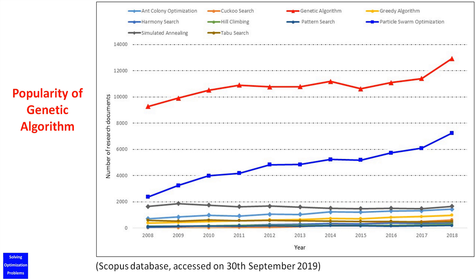Did you know that genetic algorithm is the most popular stochastic optimization algorithm? The data from the Scopus database shows the popularity of the genetic algorithm, as we can see from this figure.